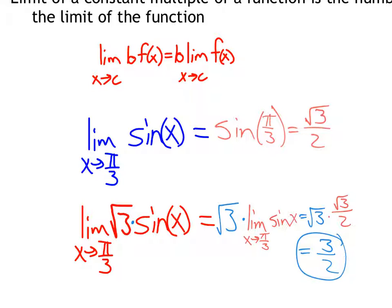So we have √3 times √3/2, which is just 3/2. You don't have to find some new approach — you can just take the limit you already know and multiply it by the constant.